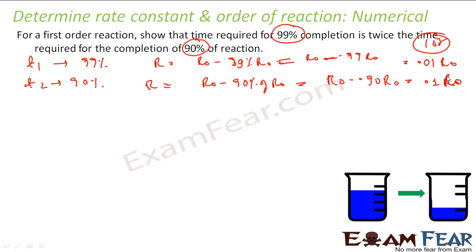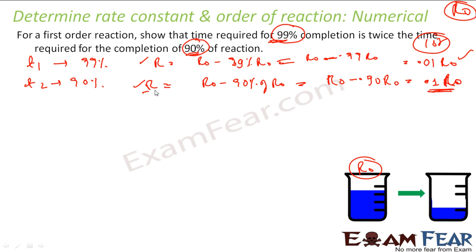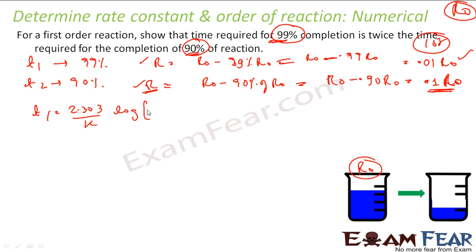So I have two cases. In one case the final concentration is 0.01 R₀, and in the other the final concentration is 0.1 R₀. In both cases the initial concentration is R₀. Now let's find T for both cases. For case one, T₁ is nothing but (2.303 / K) × log(R₀ / R), where R is the final concentration.